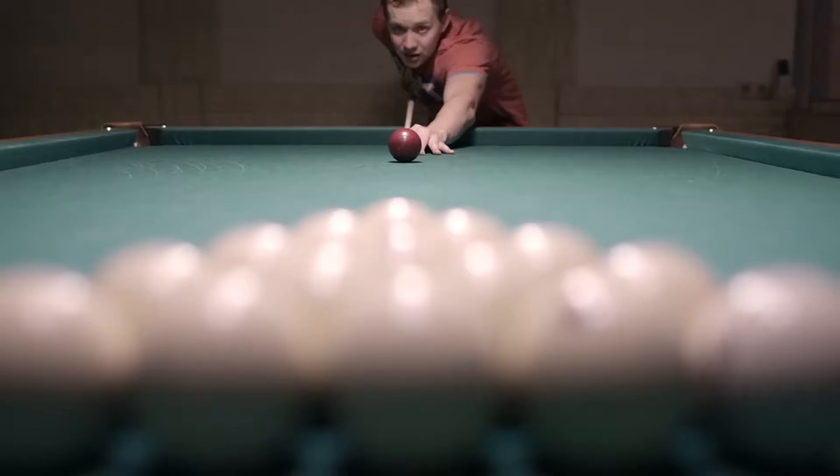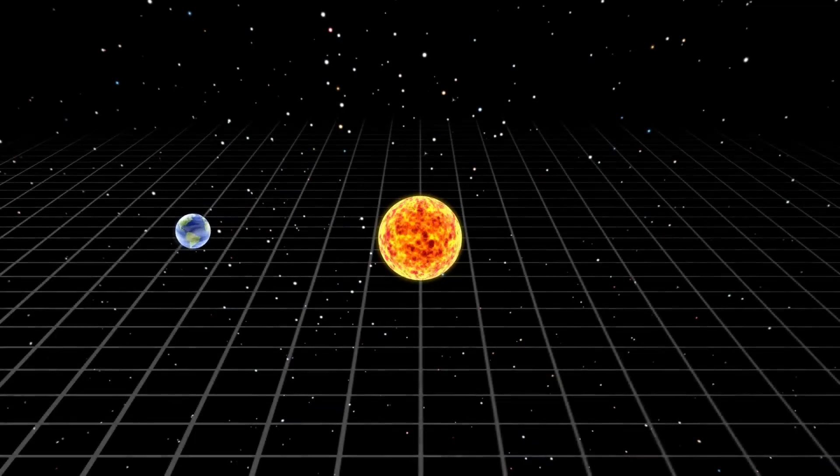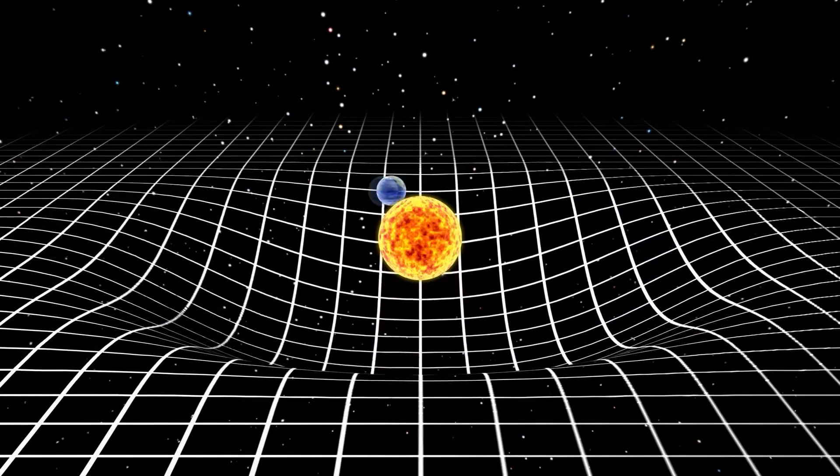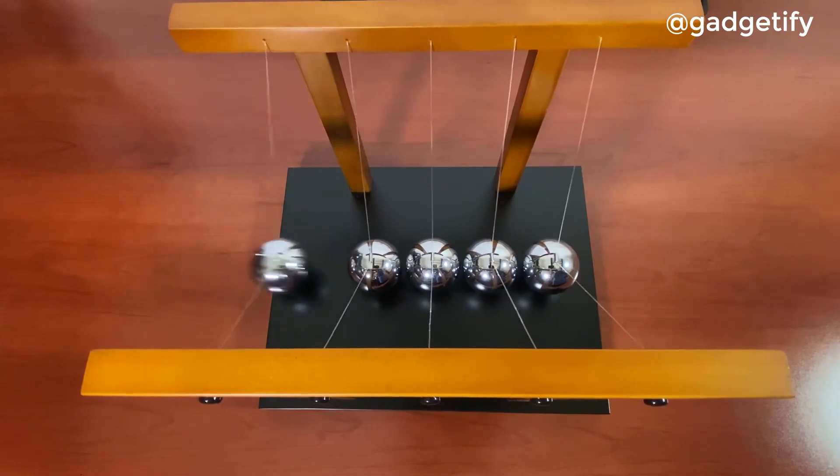As for the classical definitions of mass as a measure of a body's inertia, or its gravitational interaction, which we learned in school, they follow from this definition of mass in the limit of low speeds, that is, small values of kinetic energy and momentum.